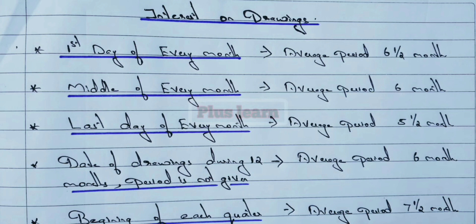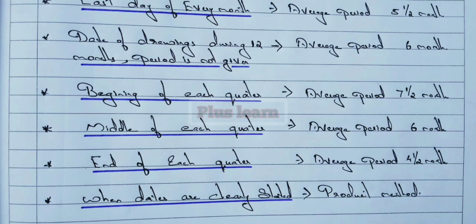Interest on drawings. The formula: Interest on drawings equals total drawings multiplied by the average period multiplied by the rate, times 1 by 12.